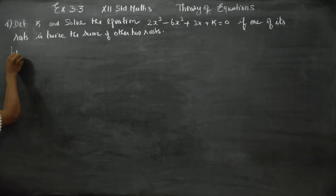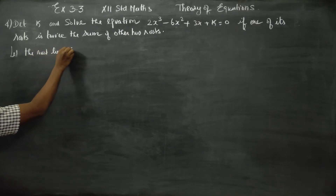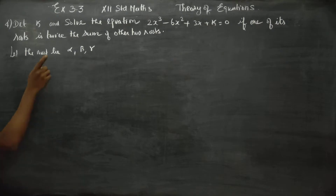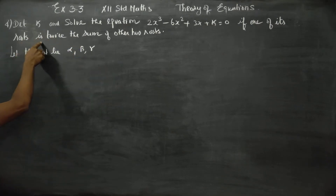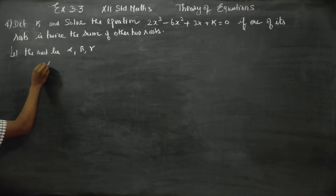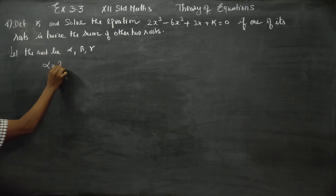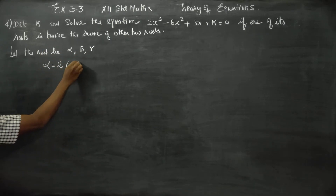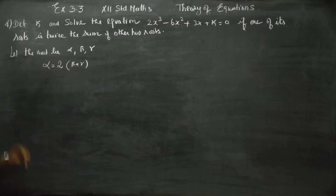Let the roots be alpha, beta, and gamma. One of its roots is twice the sum of the other two roots. So alpha is equal to 2 times (beta plus gamma).